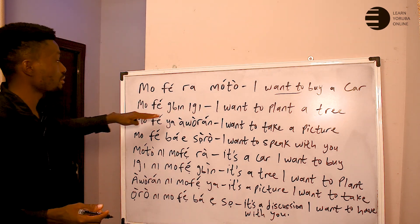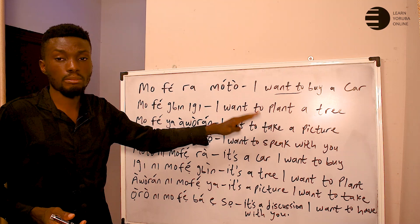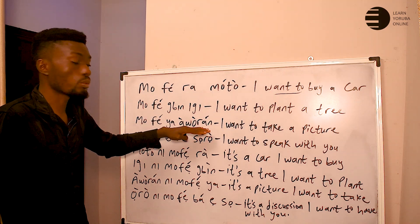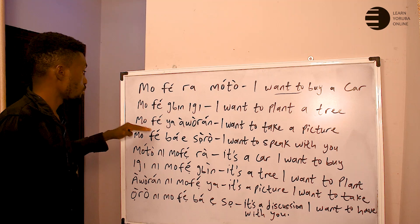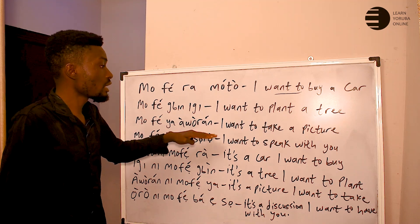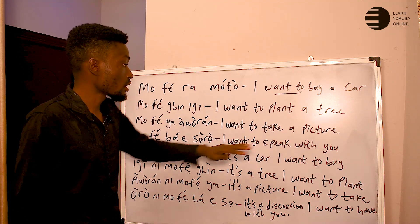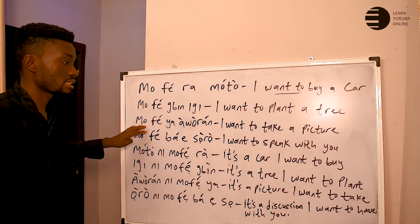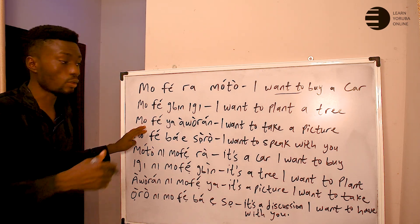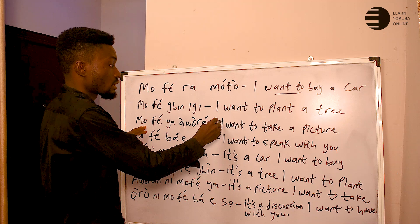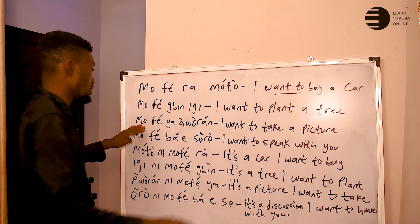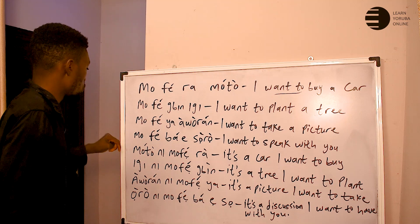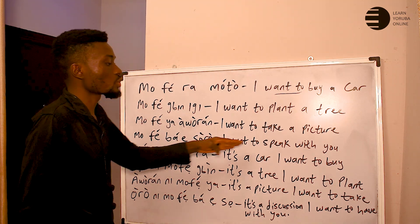To review: 'mofe ra moto' means 'I want to buy a car'; 'mofe be igi' means 'I want to plant a tree.' We also have 'mofe ya' — 'I want to take a picture.' If it is 'they want to take a picture,' it should be 'wọn fẹ ya.' So if you want to say 'I want to speak with you,' that is 'mofe ba e sọrọ.'